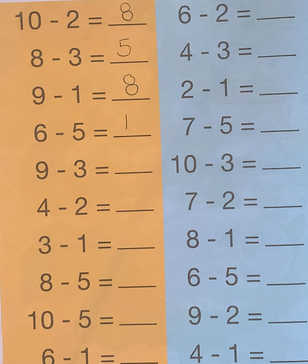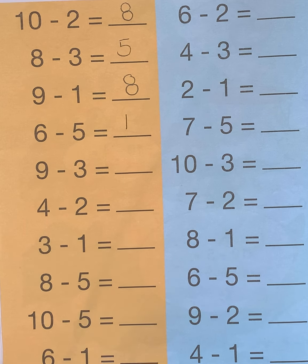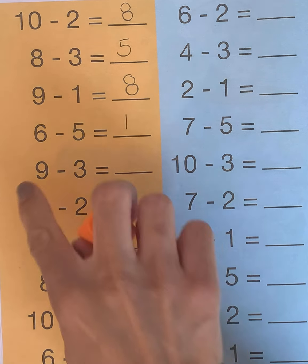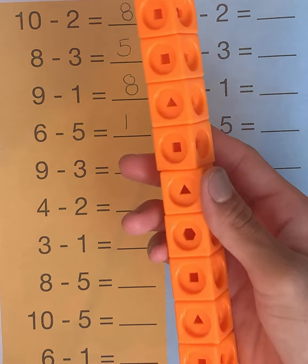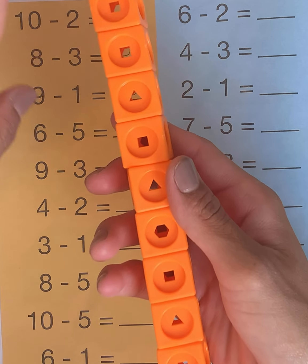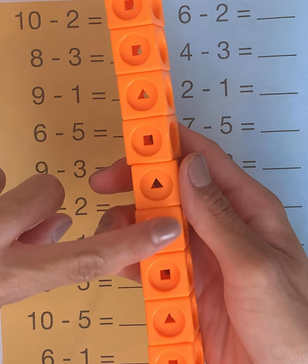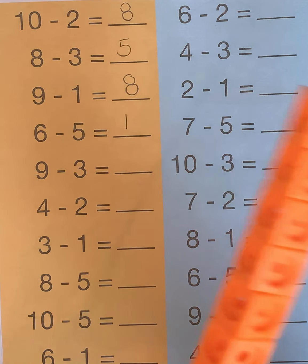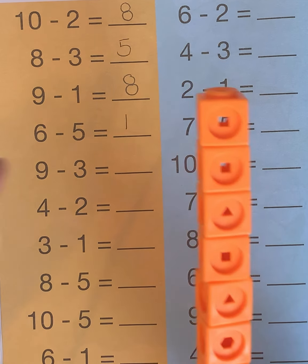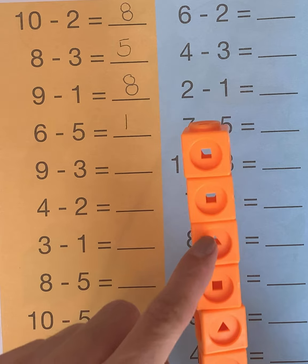Our next problem is 9 minus 3. So we want to start off with 9 cubes. Let's count together: 1, 2, 3, 4, 5, 6, 7, 8, 9. And we want to take away 3 cubes: 1, 2, 3.